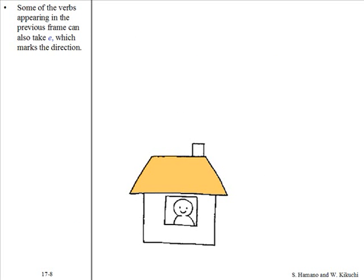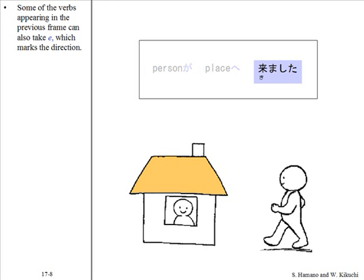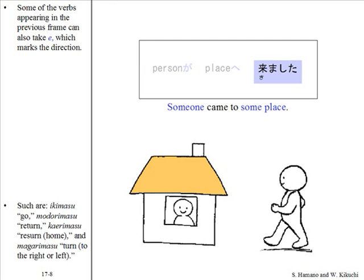Some of the verbs appearing in the previous frame can also take e, which marks the direction. Such are ikimasu, modorimasu, kaerimasu, and magarimasu.